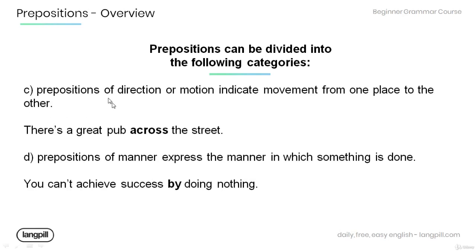C: Prepositions of direction or motion indicate movement from one place to another. As in the example below: there's a great pub across the street. The preposition 'across' tells us where the pub is and how to get there.